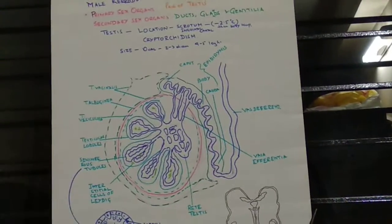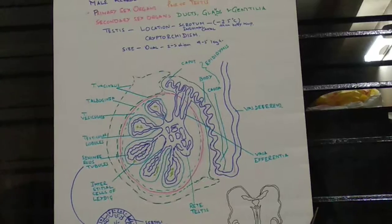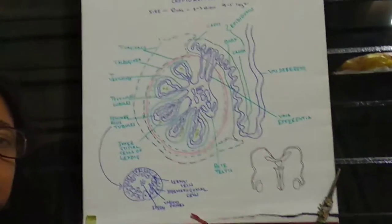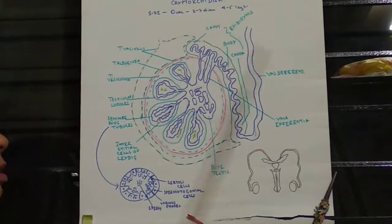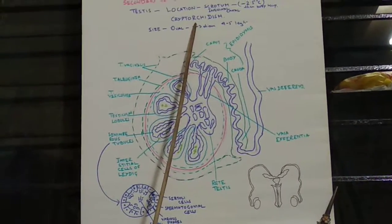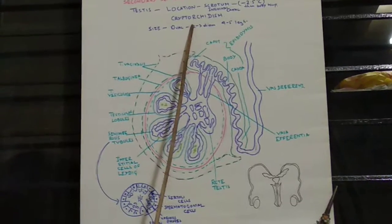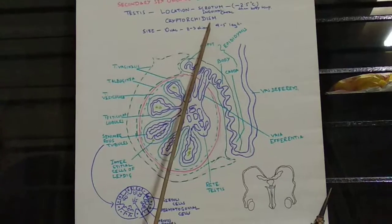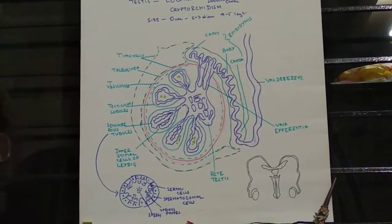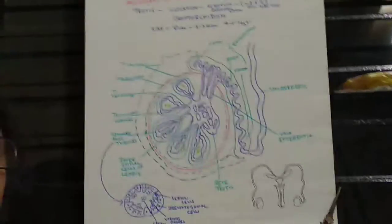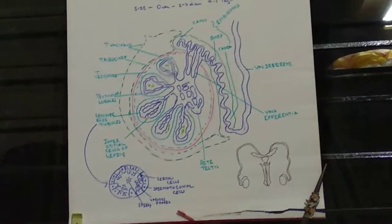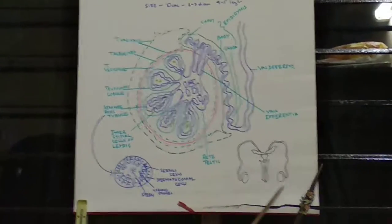Sometimes the testes fail to descend into the scrotal sac, and that condition is called cryptorchidism. A person with cryptorchidism cannot produce fertile sperm. The testes are oval-shaped, measuring 2 to 3 centimeters in diameter and 4 to 5 centimeters in length.